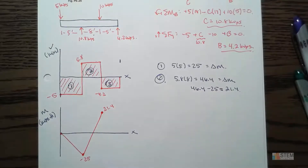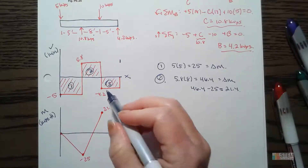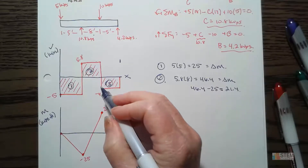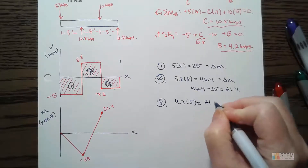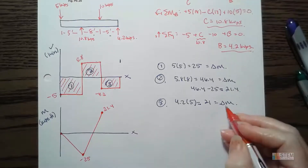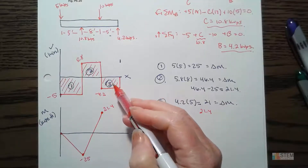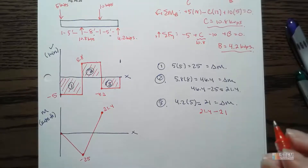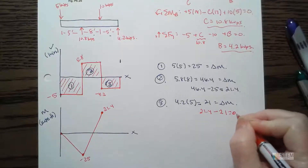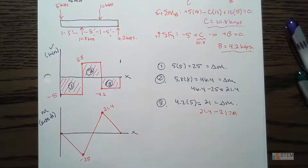Now the last section, region three: same thing — find the area of the shaded region. The height is 4.2 and the length is 5, so 4.2 times 5 equals 21 — that's our delta M. We're starting at 21.4, and since V is negative this will have a negative slope going down. Subtracting 21 gives approximately zero — my rounding caused a small error, but it takes us to zero. That completes our moment diagram.